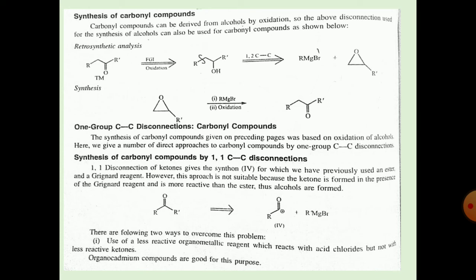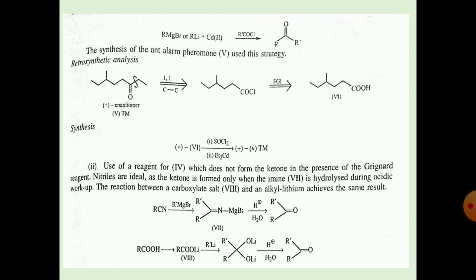The ketone is broken down into a carbocation and RMgBr (Grignard reagent). There are two ways to overcome this problem. The first is to use a less reactive organometallic reagent that reacts with acid chloride but not with the less reactive ketone — organo-cadmium compounds are good for this purpose. So, RMgBr or RLi reacts with cadmium and acid chloride to form the ketone. This strategy is used in the synthesis of an alarm pheromone.